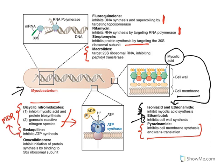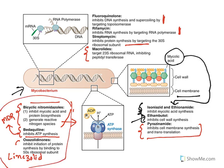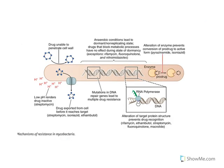Bedaquiline is also used to treat multi-drug resistant TB and it inhibits ATP synthesis. Linezolid is a protein synthesis inhibitor also used for MDR-TB. Multi-drug resistant TB is defined as resistance to both isoniazid and rifampicin, and it is treated with bedaquiline, linezolid, delamanid, and pretomanid.